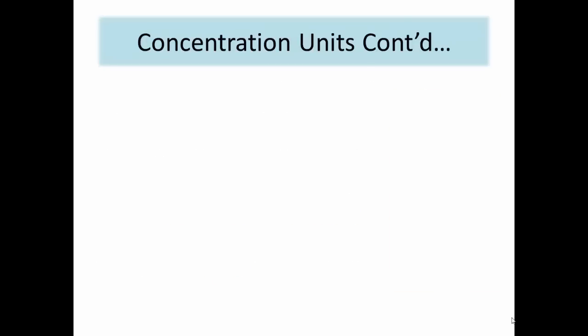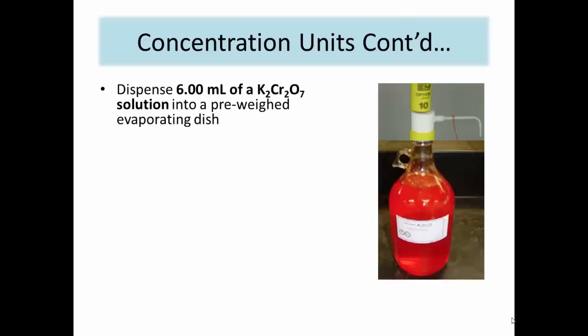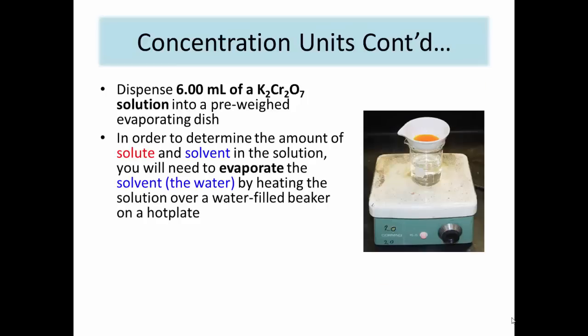Set a 150 ml beaker containing approximately 75 ml of water on a hot plate and bring it to a boil. Measure the mass of an empty evaporating dish on an analytical balance and record the mass in your data book. Dispense 6 ml of the saturated potassium dichromate into the dish. Quickly, before any of the solution evaporates, weigh and record the mass of the evaporating dish containing the 6 ml of solution. Place the evaporating dish and contents on top of the 150 ml beaker, which should now be at a gentle boil. This process will start the evaporation of the solvent in order to determine the mass of the contained solute.